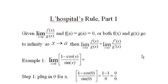L'Hopital's Rule, Part 1. Given a limit of f(x) over g(x) as x approaches a, and the fact that f(a) equals g(a) equals 0, or both f(x) and g(x) go to infinity as x heads to a, then the limit of f over g equals the limit of f prime over g prime.